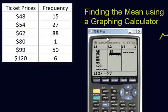Then the right column for frequency, we had 15, 27, 88, 1, 50, and 6. Alright, so now that you have your ticket prices in your left column, and your frequency in the right column, we'll quit.